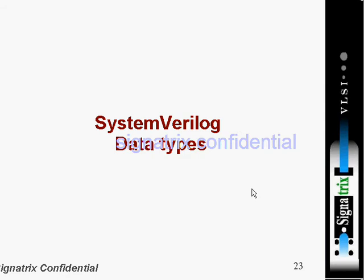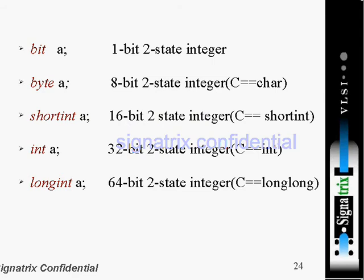Next, SystemVerilog data types. First, bit. In Verilog, do we have this bit? Bit a, suppose we are declaring like this bit a, so it will have only two states: either zero or one. It will be one bit and it will have only either zero or one. You can't assign any x or z to this one. Second, byte. If you are declaring byte a, this a will have eight bits and here also we are having only two states: either zero or one.